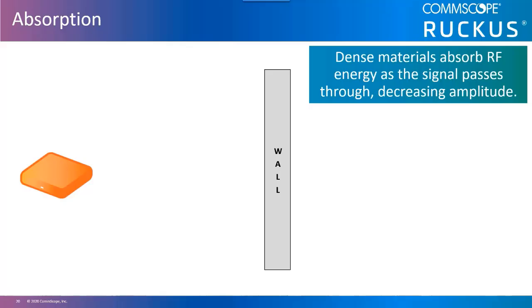Absorption. Absorption occurs when an RF signal passes through an object and is not reflected by that object. The signal may be completely absorbed or only partially absorbed, resulting in a weaker signal after having passed through the object. Many materials absorb RF signals.